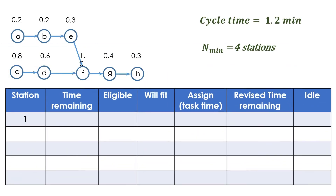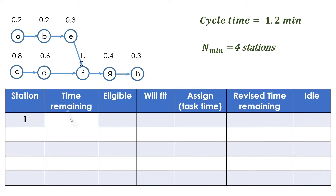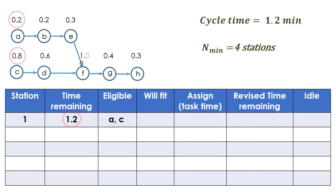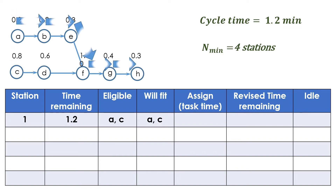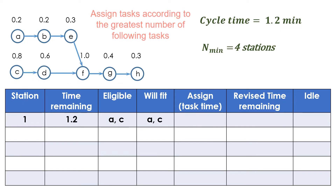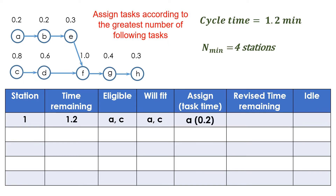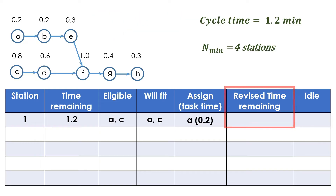Beginning with station 1, the time remaining is 1.2 as there are no tasks assigned yet. Eligible tasks are A and C because they do not have any predecessors. The time for these two tasks is less than the station's remaining time, so both will fit in station 1. Task A has five following tasks, while task C has only four followers. Applying the rule — assign tasks according to the greatest number of following tasks — we should assign task A to the first station. The revised time remaining equals 1.2 minus 0.2, which equals 1 minute. This stage has no idle time.